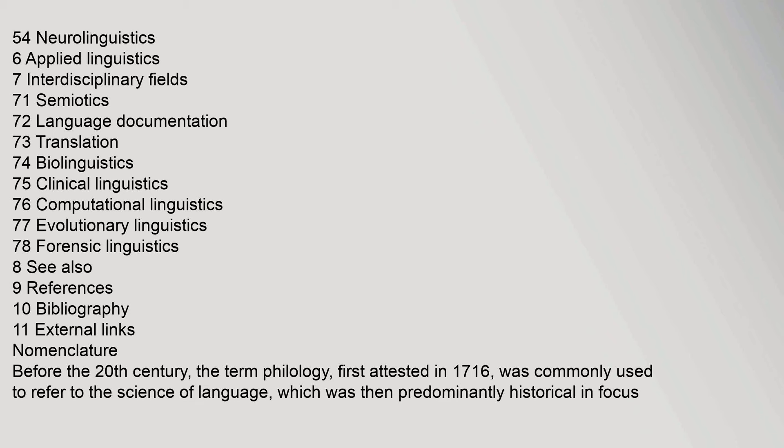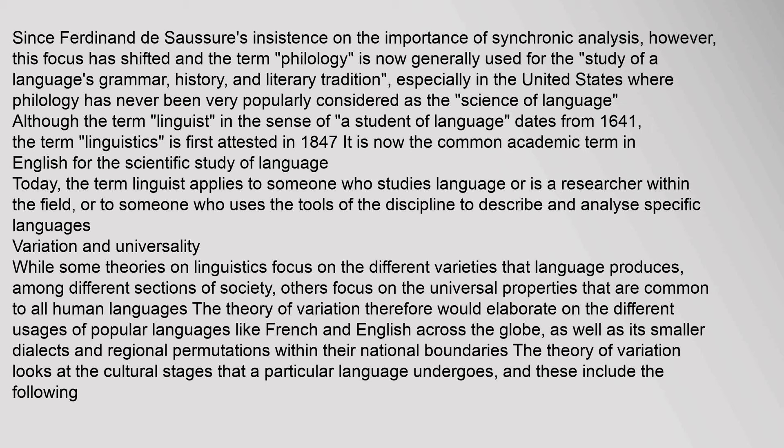Before the 20th century, the term philology, first attested in 1716, was commonly used to refer to the science of language, which was then predominantly historical in focus. Since Ferdinand de Saussure's insistence on the importance of synchronic analysis, this focus shifted, and the term philology is now generally used for the study of a language's grammar, history, and literary tradition. Although the term linguist in the sense of a student of language dates from 1641, the term linguistics is first attested in 1847 and is now the common academic term in English for the scientific study of language.